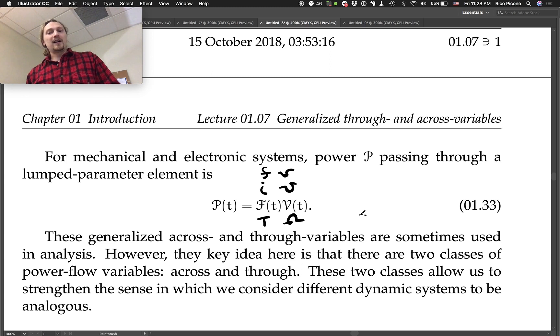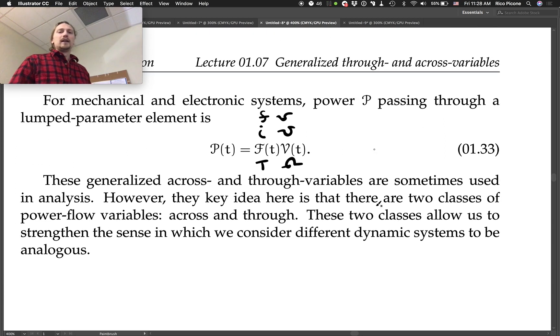But the key idea here is that there are two classes of power flow variables: across and through. These two classes allow us to strengthen the sense in which we consider different dynamic systems to be analogous. And that's sort of our main goal or maybe one of our primary takeaways from this is that if we think of velocity as being like voltage, we're starting to get on our way towards drawing analogies among all of the different system elements. Which is our next step. So in lecture 1.8, we will introduce analogies among the elements specifically and not just the variables.